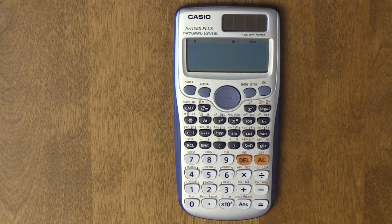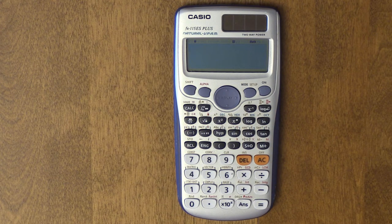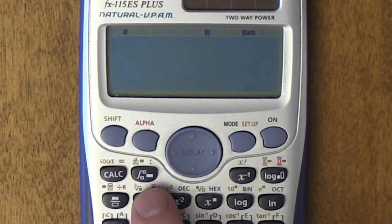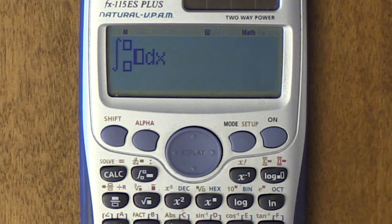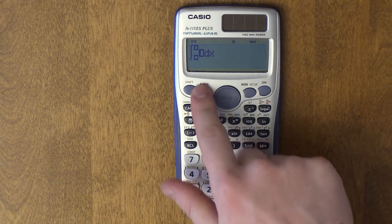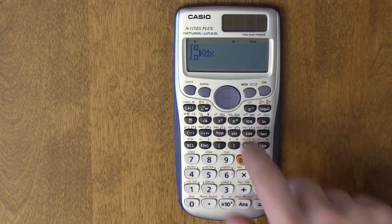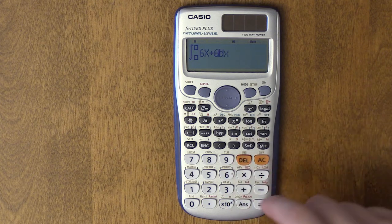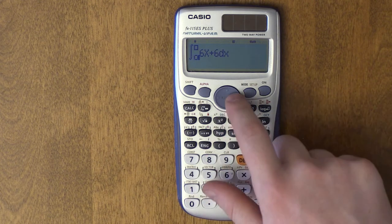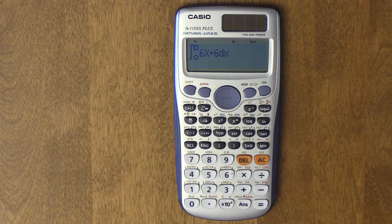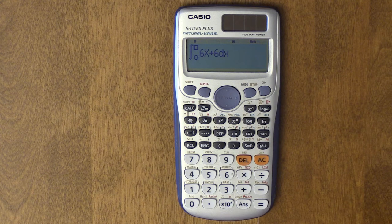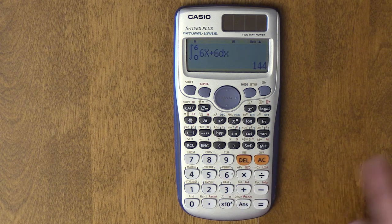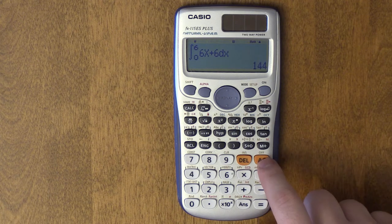The next function I wanted to go over was derivatives and integrals. The way you do that is, over here you see it has an integral sign, so you just type in integral. To get to x, it's in red, so you do alpha x. Let's say I want to do 6x plus 6, and then you have to enter bounds. This has to be a bounded integral, it doesn't do non-bounded integrals. You get 144, and that's actually the correct answer.